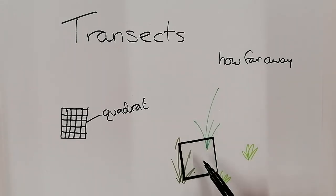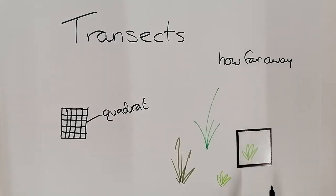If my quadrat had been placed here, there are two plants in it. So I'd have to identify this type of plant and say there was one of them, and this type of plant and say there was one of them. So quadrats are used for placing on the ground, and then instead of counting every single plant that's available in an area, you only count the ones inside the quadrat.